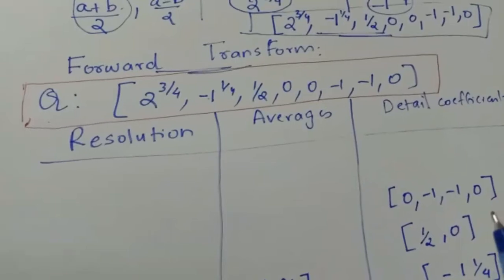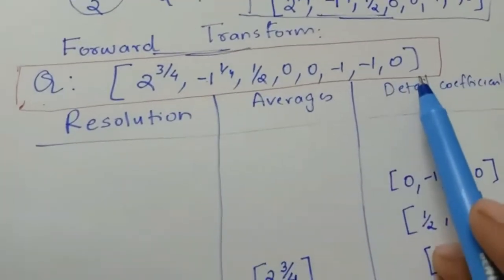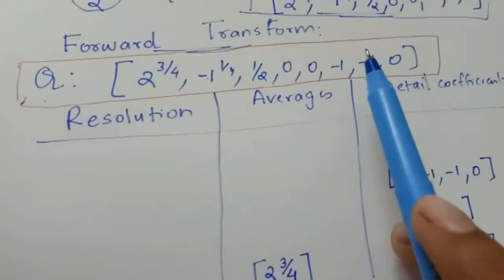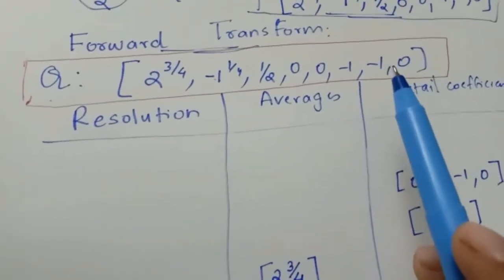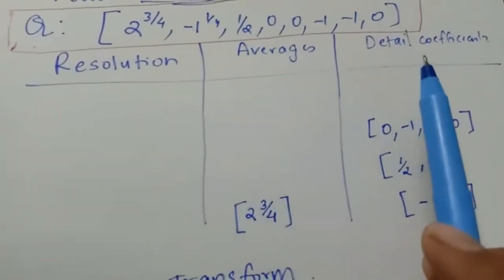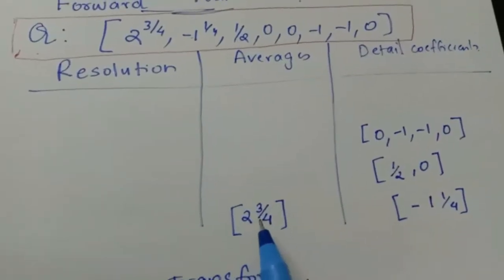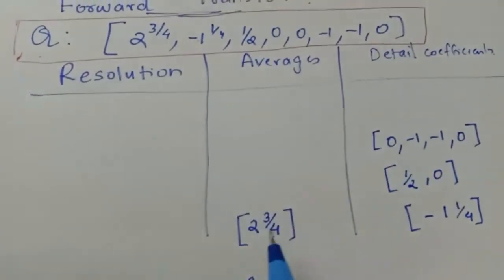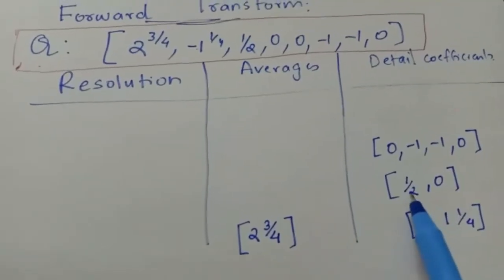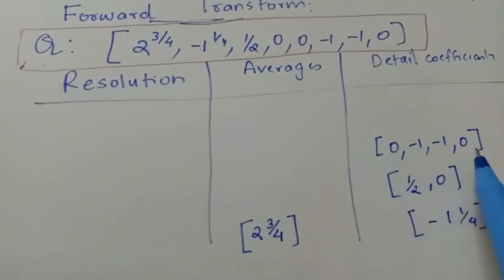Now, if the transformed vector is given and we have to find the original vector, we perform the inverse transform. Again we draw the columns and write the transformed vector by placing the first number, then the second, then the vector with 2 digits, then the vector with 4 digits.